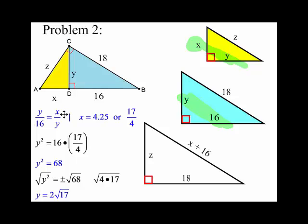So I got Y over 16 is equal to X over Y and then I'm substituting in this value for X in place of that X. So you cross multiply, there's your Y squared, you get 16 times that value.